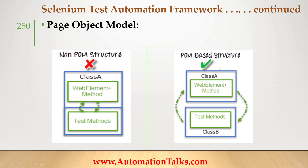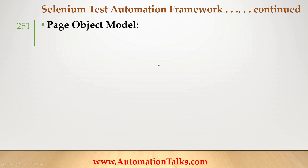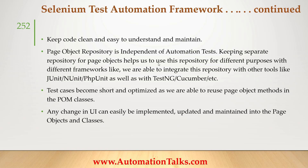When we turn it to a POM-based approach, Class A contains only web elements plus corresponding methods - for example, a method like 'enterLoginDetails' in which I enter username, password and click the login button. Actual test methods go into a separate Class B. Class A acts as the page objects class and Class B is the actual test cases. This way we separate actual test cases from locators and their corresponding methods.